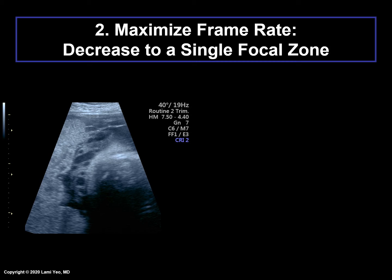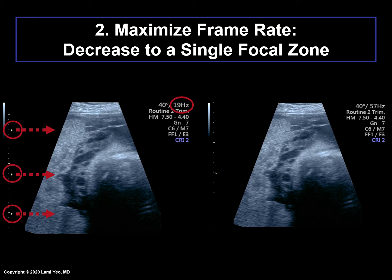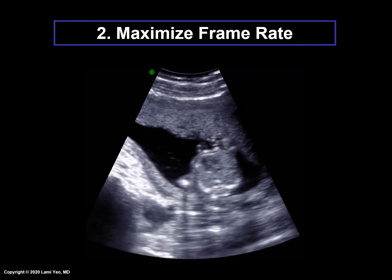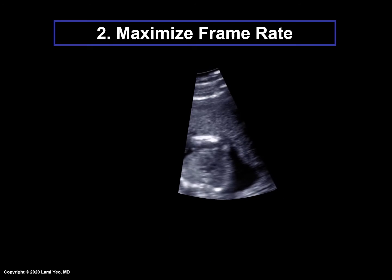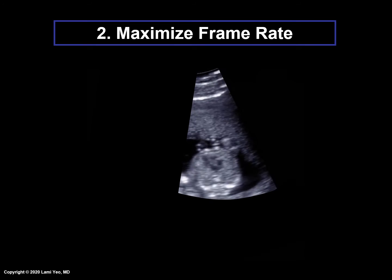The focal zone is a region around the focus where the beam is relatively narrow and where image detail is superior. With single focus imaging, only one sound pulse is transmitted down each scan line, resulting in superior temporal resolution and a higher frame rate. Here, with three focal zones, the frame rate is only 19 hertz. However, by decreasing to only a single focal zone, the frame rate increases to 57 hertz. Putting this together, the sector width around the fetal heart is decreased as well as the depth below the fetal heart in the imaging window — all done to maximize the frame rate.